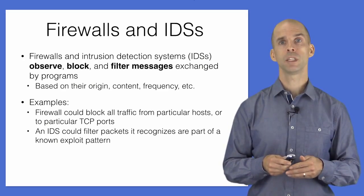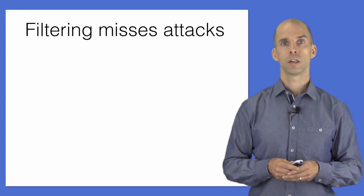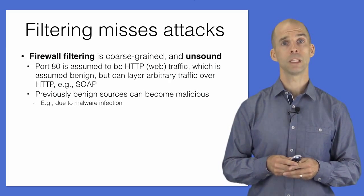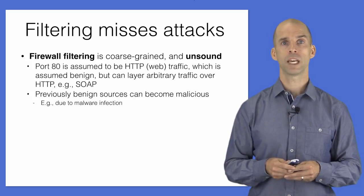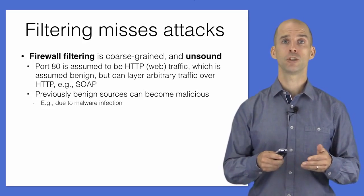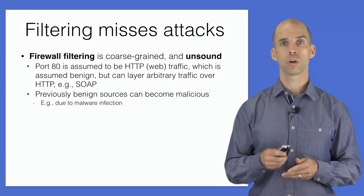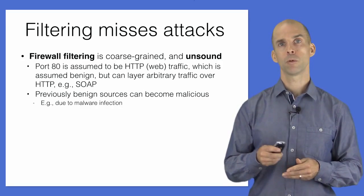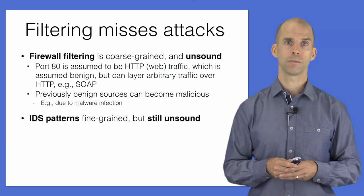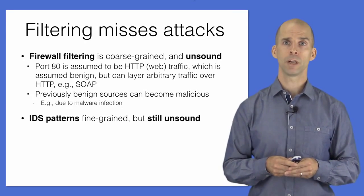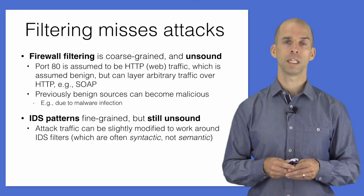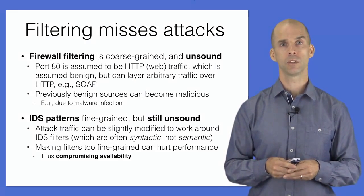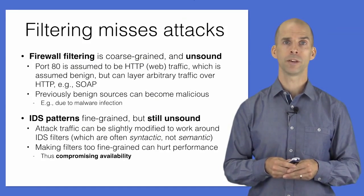Firewalls and IDSs are good at reducing attack avenues and preventing known attack vectors, but both can be worked around. Most firewalls allow traffic on port 80, assuming it is benign web traffic, but there is no guarantee. Developers invented SOAP (Simple Object Access Protocol) to work around firewall blocking on non-port-80 ports, encoding general-purpose messages using the web protocol. IDSs can also be fooled by inconsequential differences in attack patterns, and attempts to use more sophisticated filters can slow down traffic — attackers can exploit such slowdowns to create a denial of service.